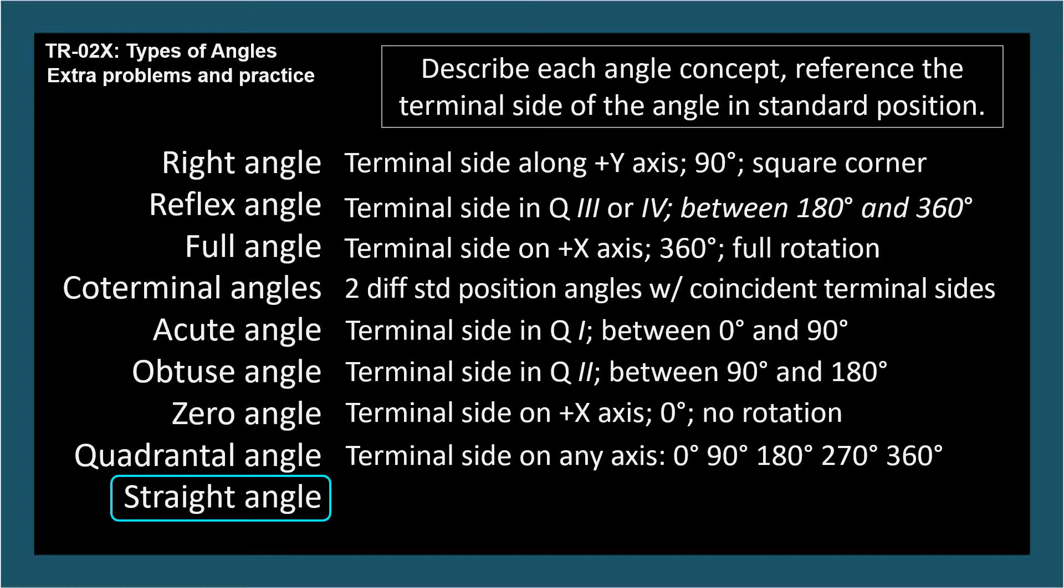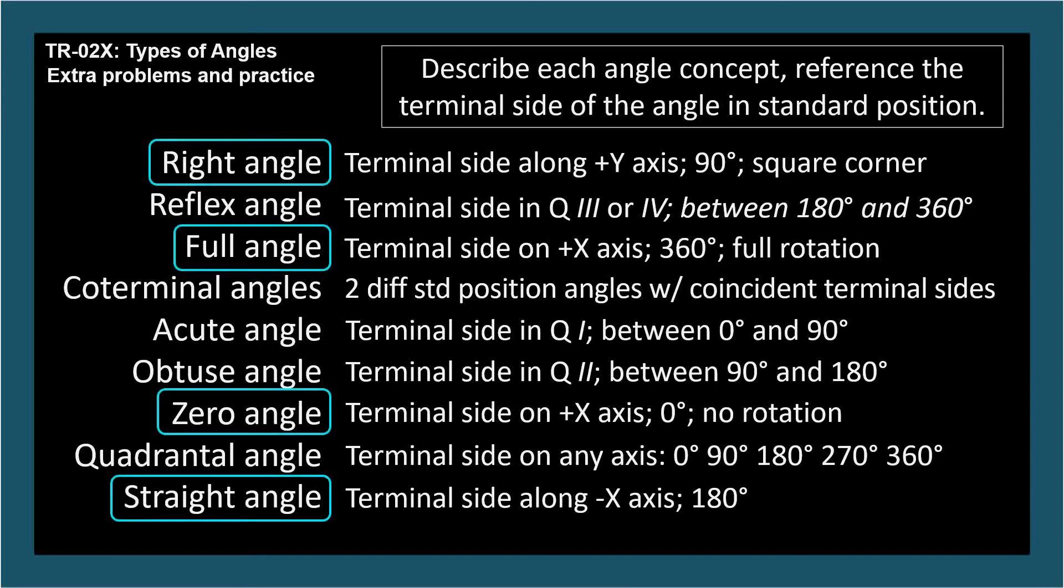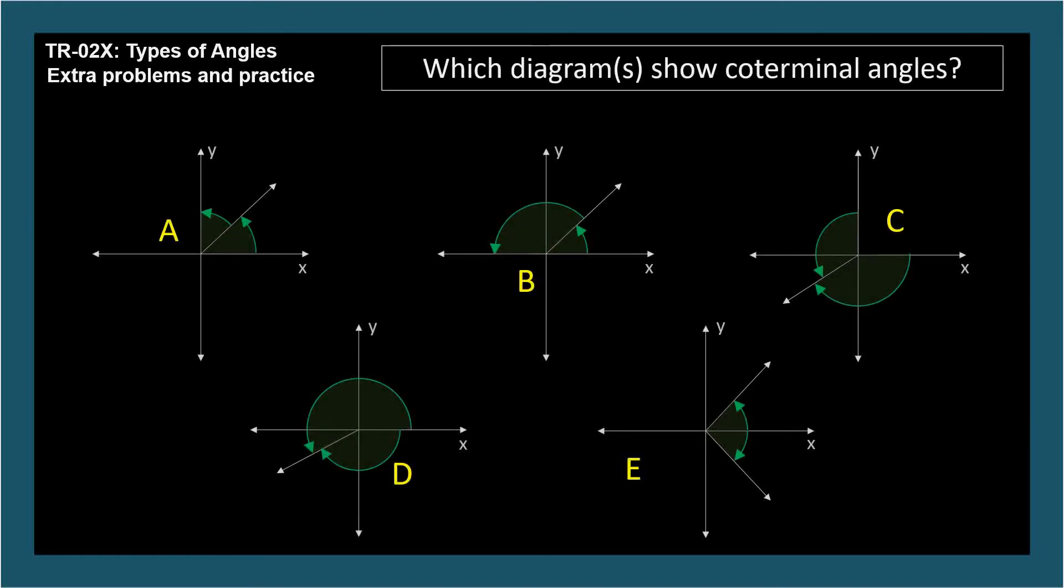Straight Angle: The terminal side is along the negative x axis. The angle is 180 degrees. Which of these angles are quadrantal angles? Which diagrams show coterminal angles? Pause and I'll reveal the answer.